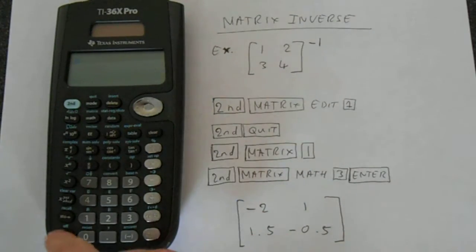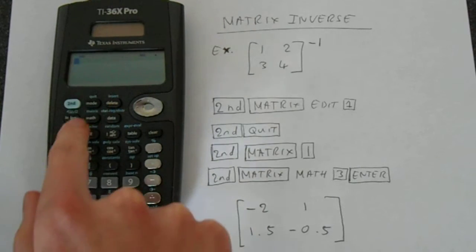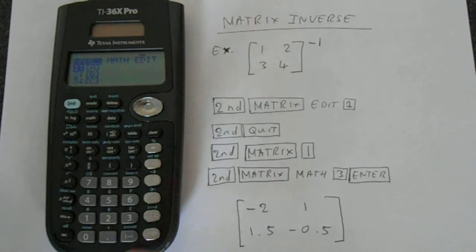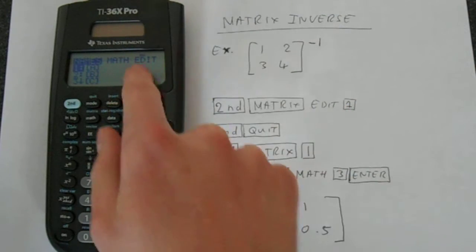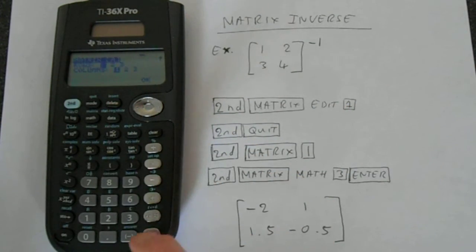So the first thing we have to do is we have to go into the matrix mode. We press second function, then press matrix which is on the math button. Then we go along to edit and we want 1 so we'll just press enter.